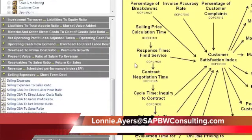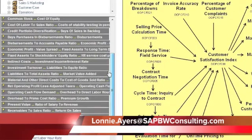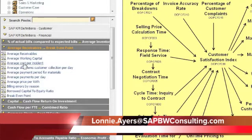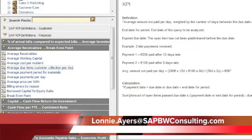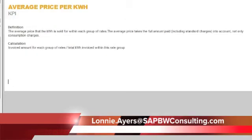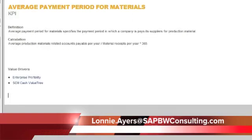Let's just take a look at a couple of others that are interesting. Average receivables — some of them have more information than these. This will actually tell you how it's computed. And if you're a BW consultant, this is exceptionally important to know because it's very hard to get people to agree on how you calculate. But in this case, SAP has already done the work for you. And in some cases over here, it will tell you if there is standard content that exists. And here's another one of those value driver trees.